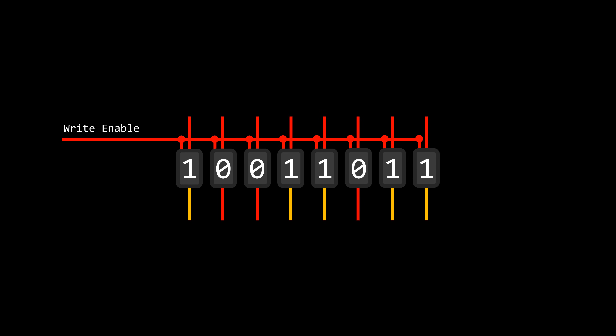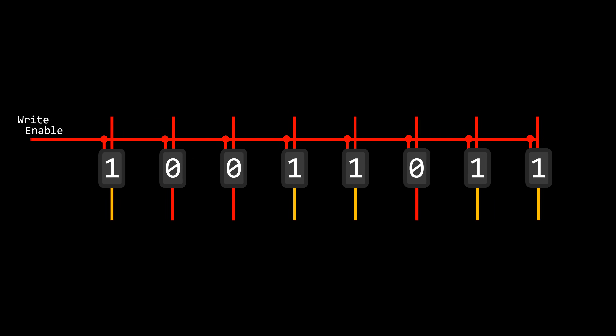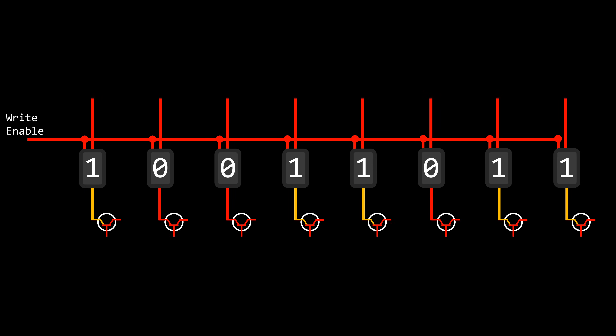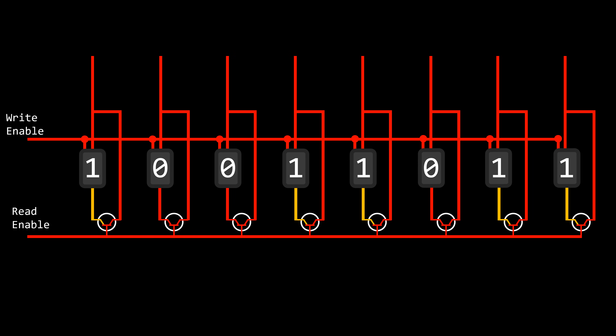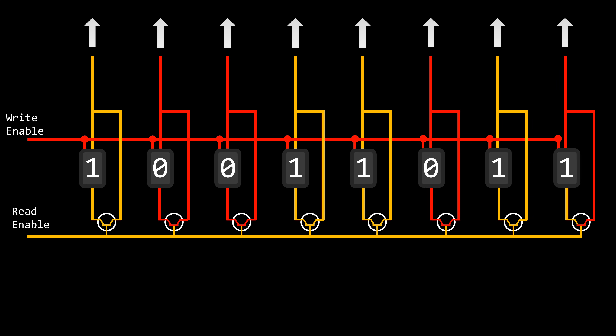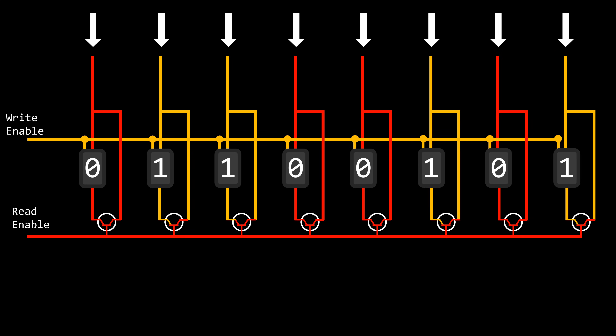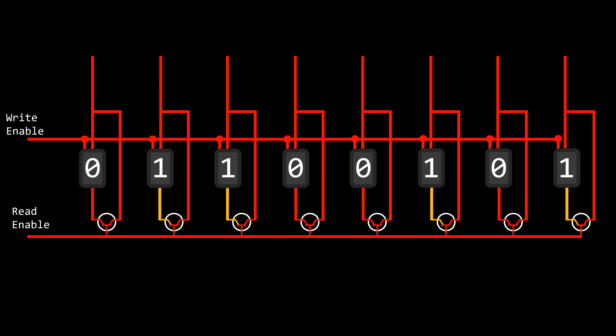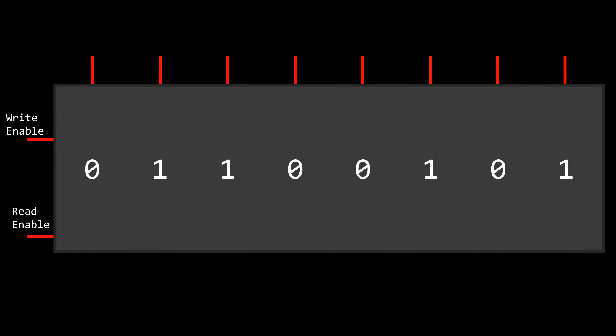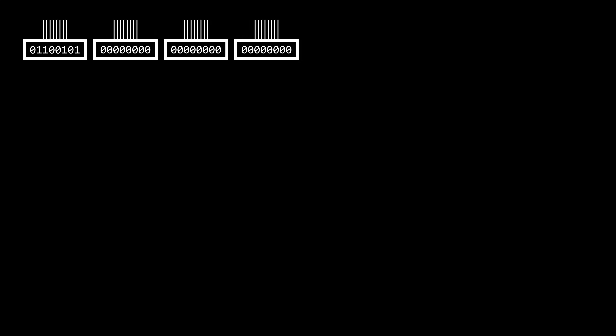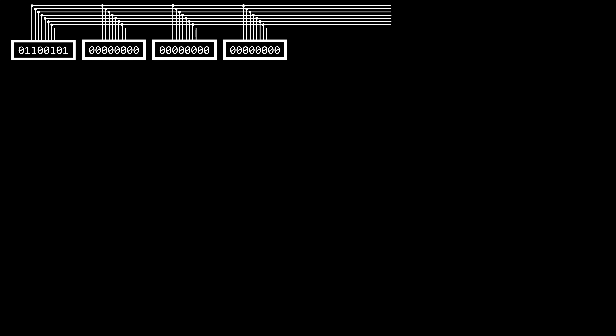Our first goal is to reduce the number of wires used. We can modify each latch so that the same wires serve as both inputs and outputs. By activating a read-enable signal, these wires act as outputs, allowing us to read the stored information. By activating the write-enable signal, we use the same wires as inputs to overwrite the information. This approach reduces the number of wires when working with multiple registers by combining their data lines into a single general data bus.